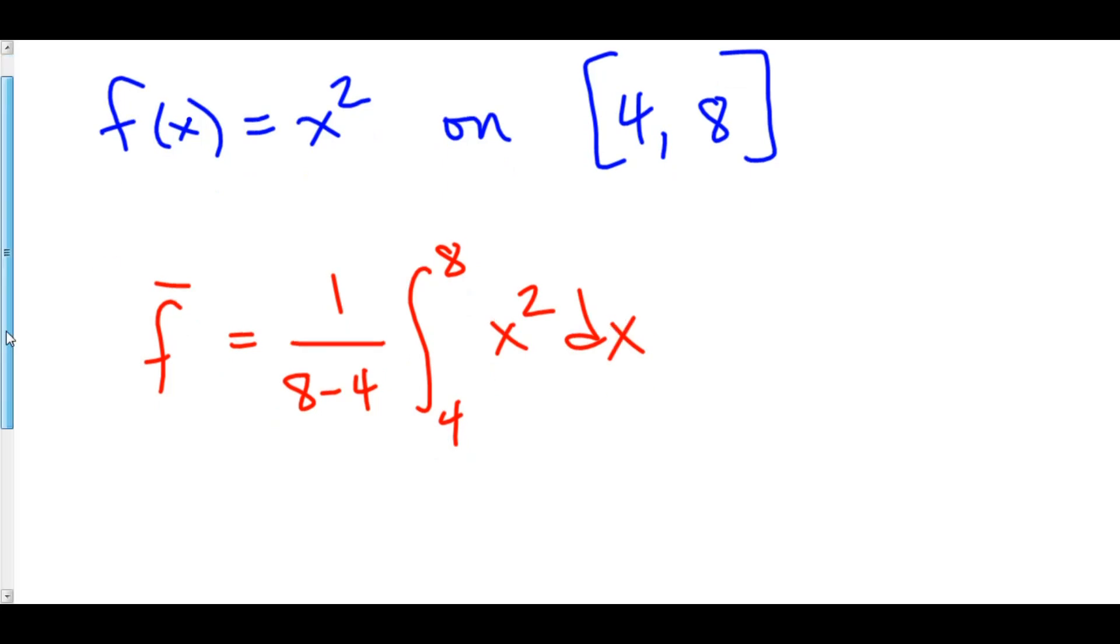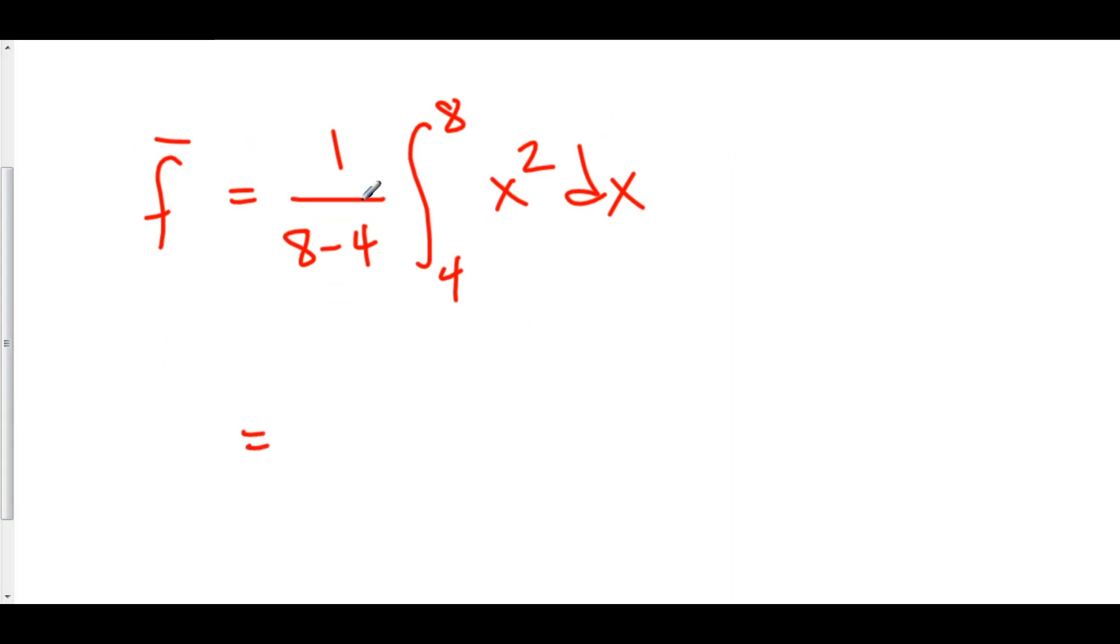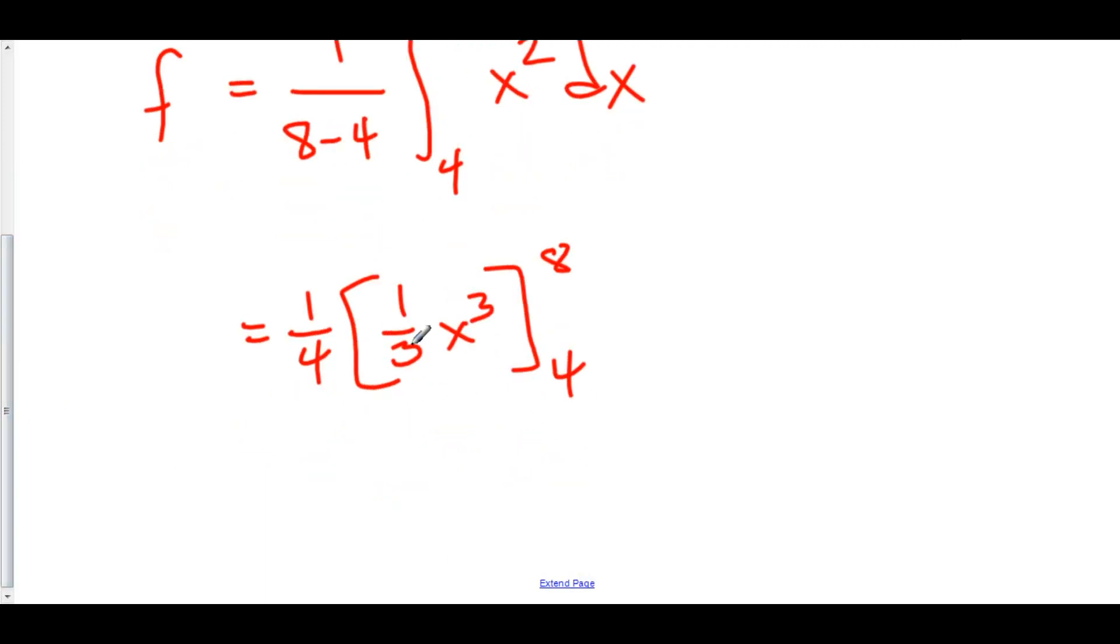This is equal to 1 fourth times the anti-derivative of x squared, which is 1 third x cubed from 4 to 8. Well, let's take out this 1 third to make things a bit simpler. 1 fourth times 1 third is 1 over 12.